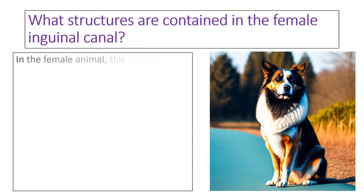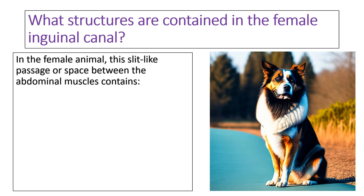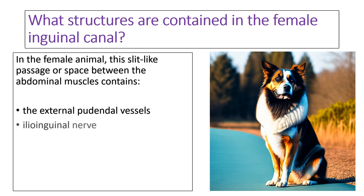The female inguinal canal contains only a few structures compared to the male. These are the external pudendal vessels — including the arteries and veins — the ilioinguinal nerve, and the genitofemoral nerve.